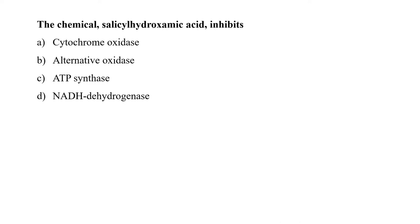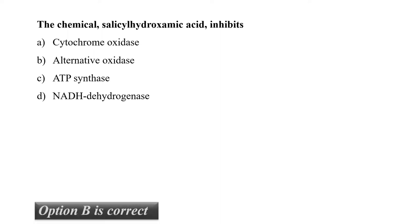The next question is: the chemical salicylhydroxamic acid (SHAM) inhibits? Salicylhydroxamic acid inhibits the enzyme alternative oxidase. This enzyme is present in the mitochondrial electron transport chain system of plants, some fungi, and protists. SHAM acts as an inhibitor of alternative oxidase by blocking the largely uninhibited flow of electrons. So our correct option is B, that is alternative oxidase.